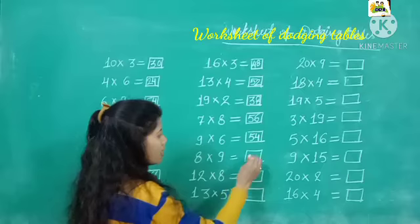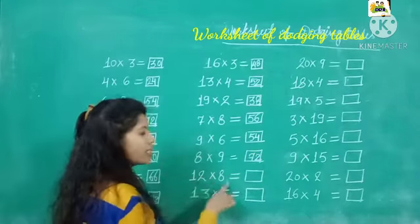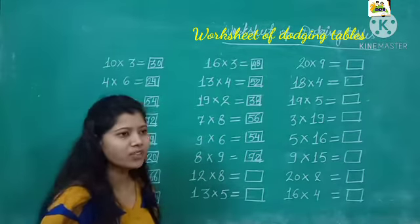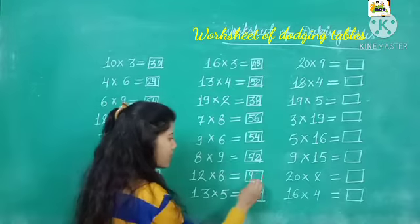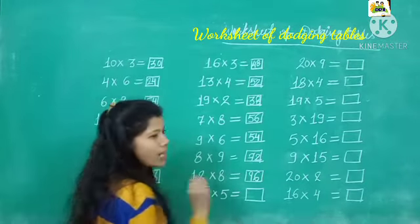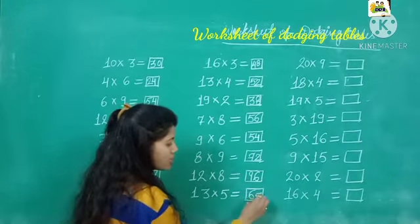8 nines are 72. 12 eights are. What is 12 eights are? Kitna hoga? 96. 13 fives are. 5 se karenge to 65.